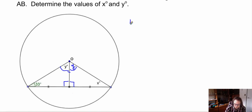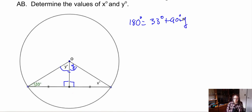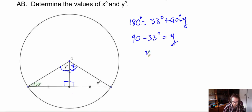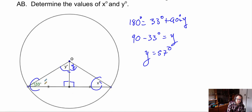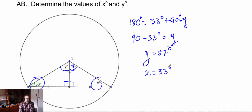To find y: the angles in a triangle sum to 180 degrees. We have 33 degrees and 90 degrees, so 180 − 90 − 33 = y, giving y = 57 degrees. For x: since these are congruent triangles — by side-angle-side — x equals 33 degrees.